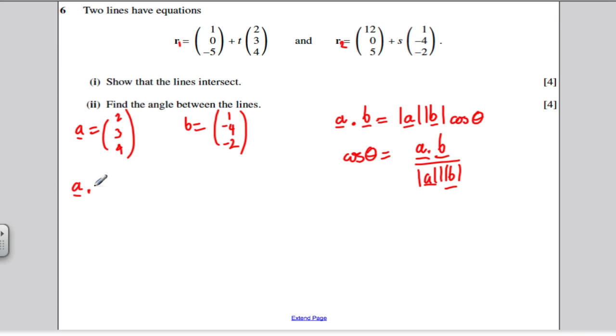So now we're just going to do that. We're going to work out A dot B and we're going to work out mod A and mod B. We're going to plug it into this formula, work out cos of the angle and then work out the angle. Very straightforward. So A dot B. 2 times 1 is 2. 3 times minus 4 is minus 12. And 4 times minus 2 is minus 8. Combine these together and we would get minus 18.